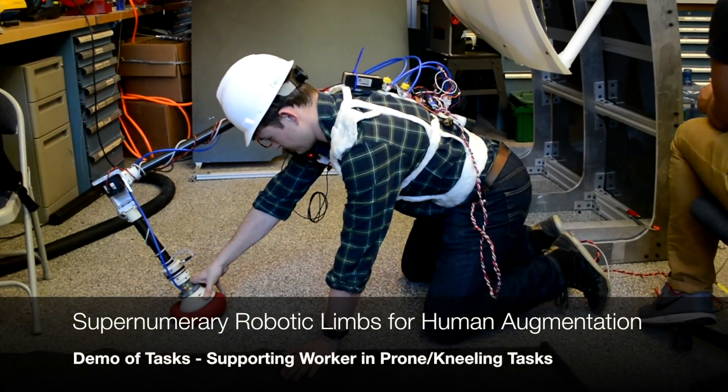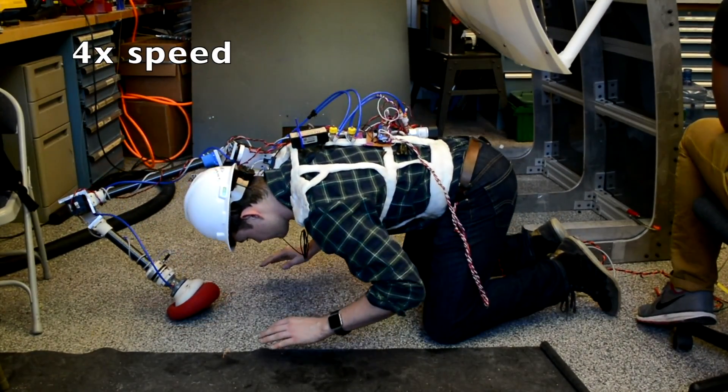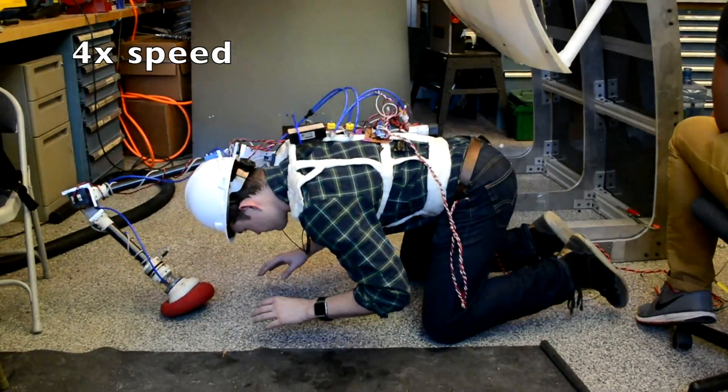Lastly, we demonstrate that the SRL can support a human worker in prone and kneeling positions. These kneeling tasks are very common in manufacturing, and by using the SRL, the technician's hands are free to work without having to hold themselves up.